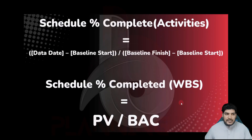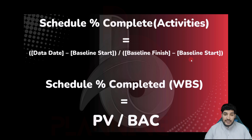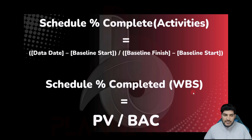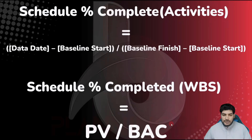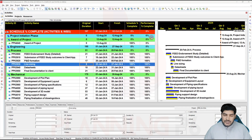For the activities, the formula for schedule percent complete is: (Data Date minus Baseline Start) divided by (Baseline Finish minus Baseline Start). You can create this formula in Excel as well, but in Primavera it is automatically calculated. For the schedule percent complete at the WBS level, it equals Planned Value divided by Budget at Completion. For performance percent complete there is also a different formula, but for clarity I have written only one formula here.